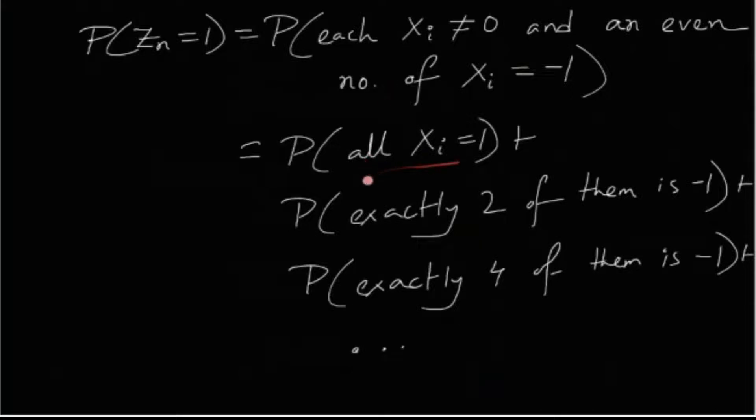Either all xi's are 1. This is one possibility. Exactly two of them are minus 1 and the rest are 1. Exactly four of them minus 1 or rest are 1 and exactly in this way we have broken down the probability.